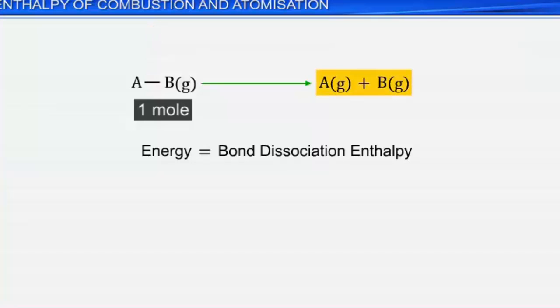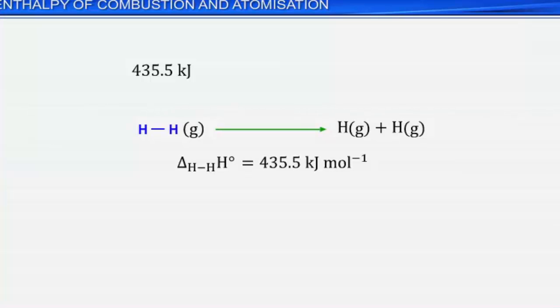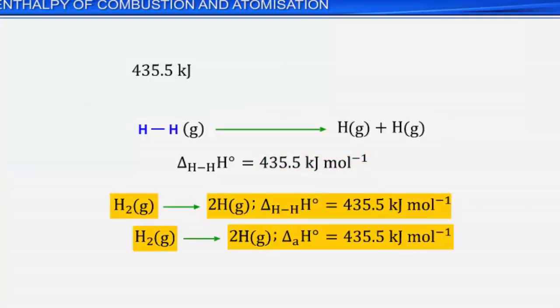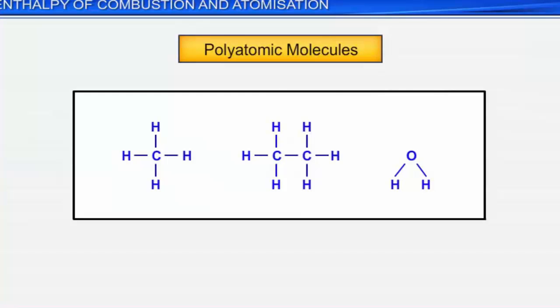For example, 435.5 kJ per mole of energy is required to dissociate one mole of hydrogen gas into hydrogen atoms. Hence, the bond dissociation enthalpy of hydrogen is 435.5 kJ per mole. Note that this is the same as the enthalpy of atomization of hydrogen gas. For diatomic molecules, bond dissociation enthalpy is the same as atomization enthalpy. In case of polyatomic molecules, bond dissociation enthalpy is different for different bonds within the same molecule.